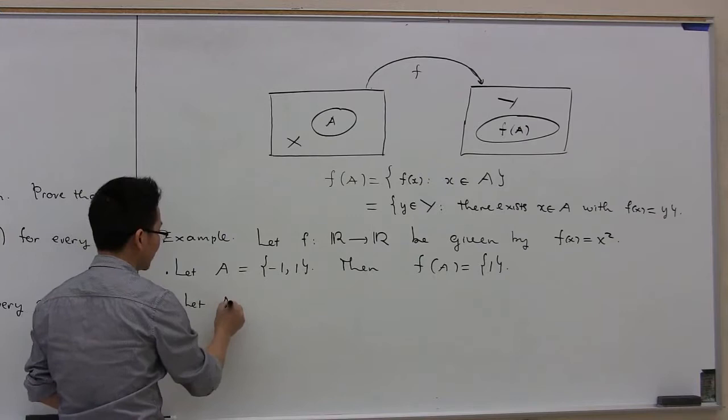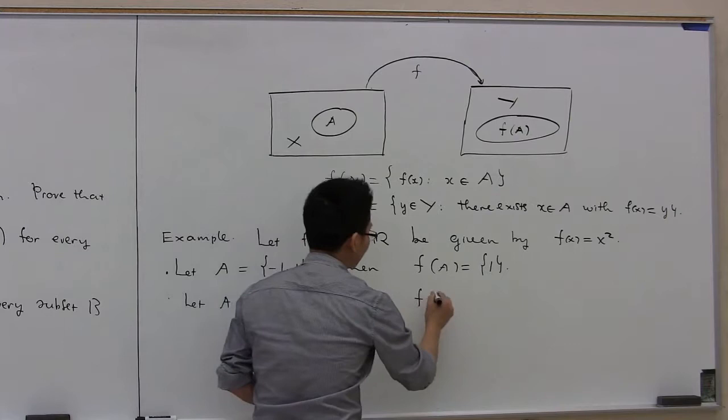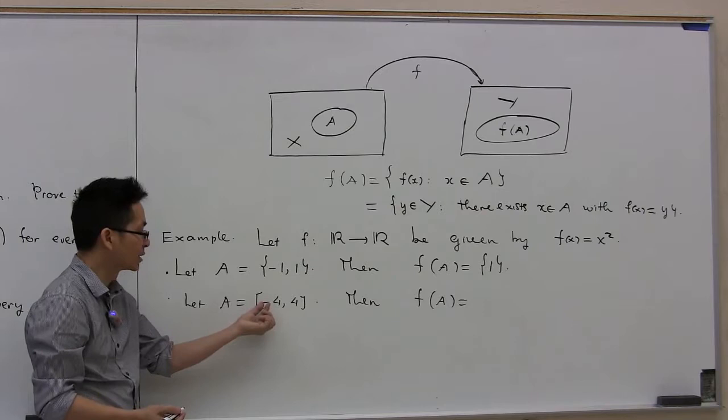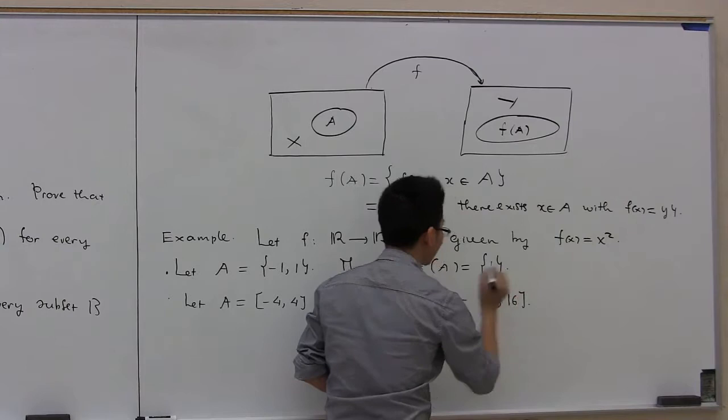Let's look at another example. Let A be the set [-4, 4]. What is f of A? If you square every number from -4 to 4, you will get numbers from 0 to 16. So f of A here is [0, 16].